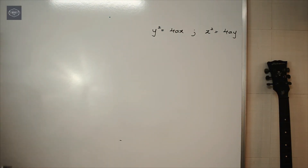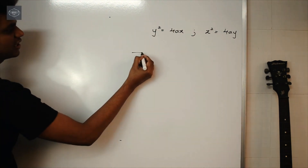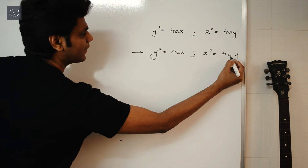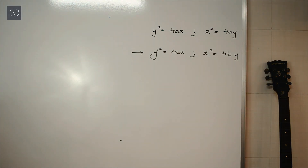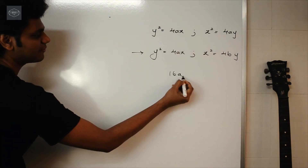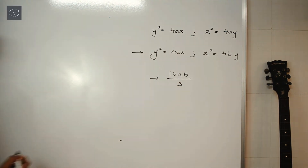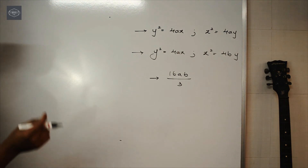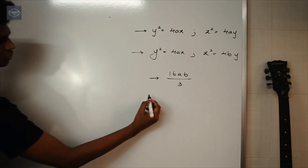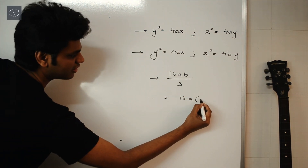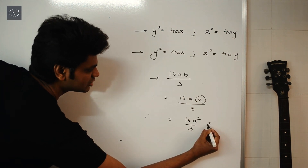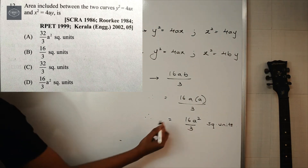Our standard equations are y² = 4ax and x² = 4by, and the area between them is 16ab/3. Comparing the given equations with the standard ones, everything is the same except b is replaced by a. So in the shortcut formula, we simply replace b with a as well. Therefore the area = 16a × a / 3 = 16a²/3 square units, which is option D.